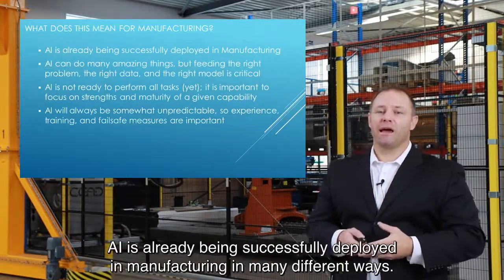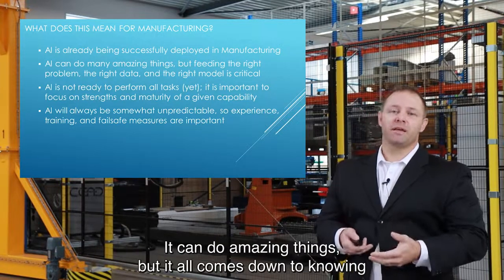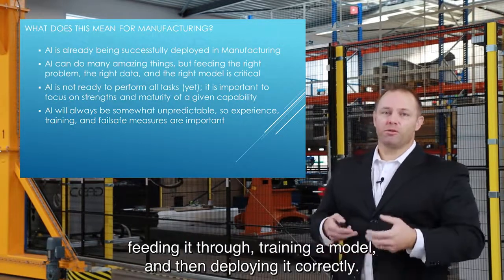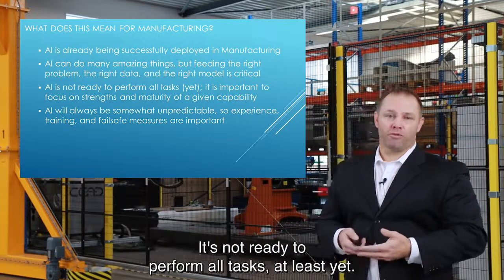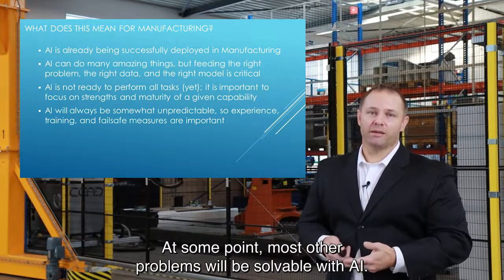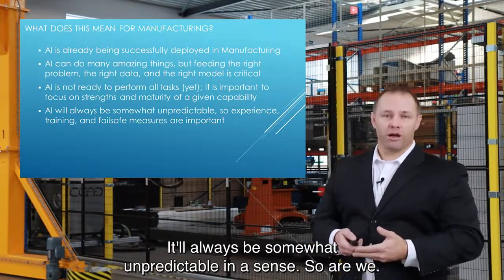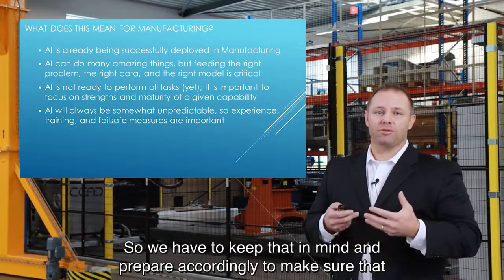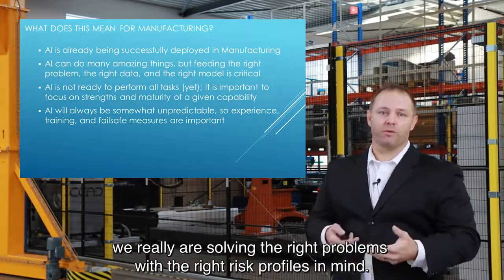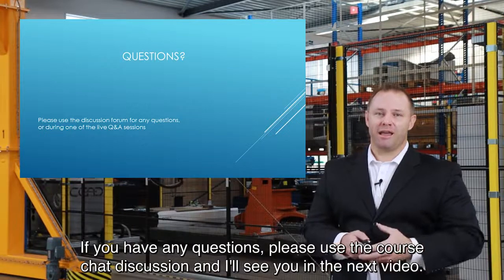So what does this mean for manufacturing? AI is already being successfully deployed in manufacturing in many different ways. It can do amazing things, but it all comes down to knowing what problem you're solving, making sure you have the right data, feeding it through, training a model, and then deploying it correctly. It's not ready to perform all tasks — at least not yet. At some point, most problems will be solvable with AI; it's just a matter of time and the effort we're willing to invest. It will always be somewhat unpredictable, and in a sense so are we. We have to prepare accordingly, solving the right problems with the right risk profiles in mind. If you have any questions, please use the course chat discussion and I'll see you in the next video.